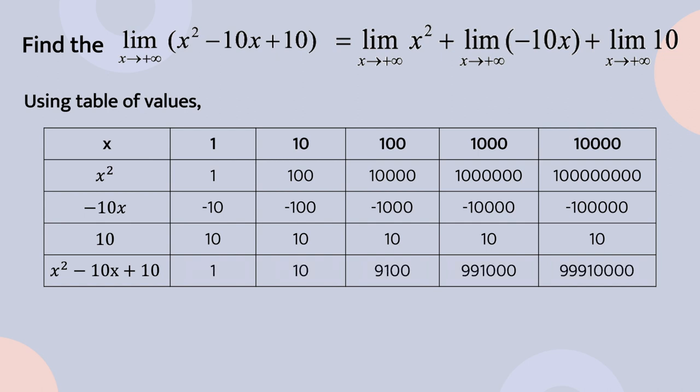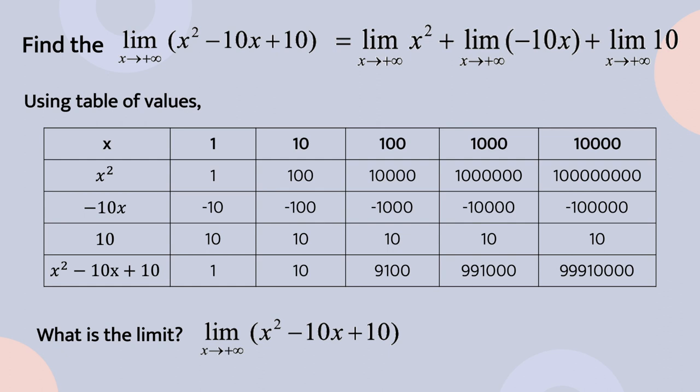As shown in the table, the value becomes larger and larger. The limit of x² − 10x + 10 as x approaches positive infinity is positive infinity. And that is theorem number 1 on limits at infinity of polynomials. Watch the next video for the second theorem. Thank you for watching this video.